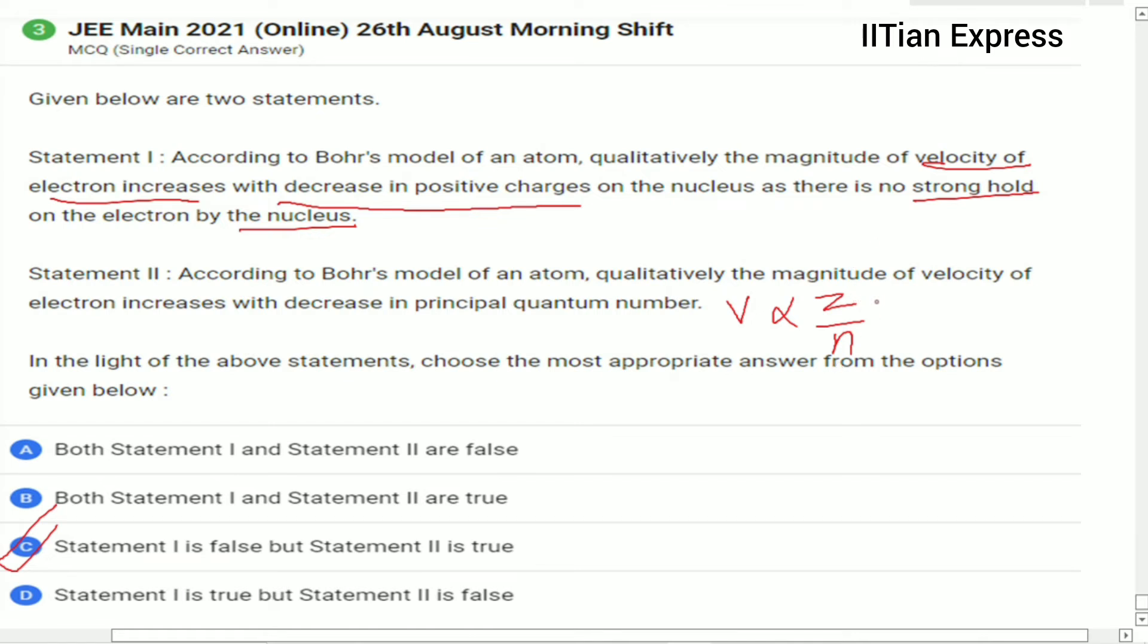If Z is increasing, it means the number of protons is increasing. If the number of protons is increasing, it means atomic number is increasing, then velocity will be increasing. If n, principal quantum number, is increasing, then velocity will decrease.